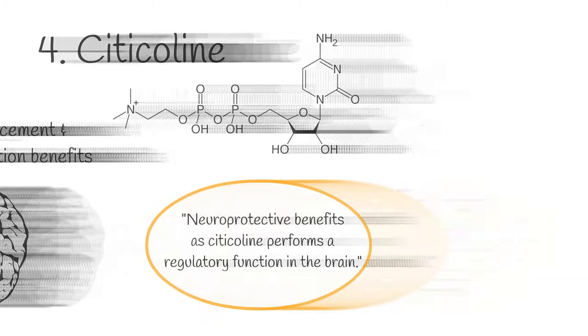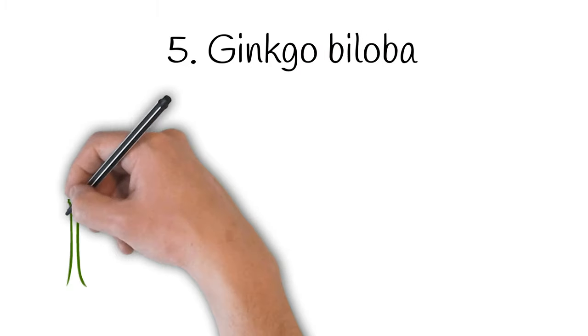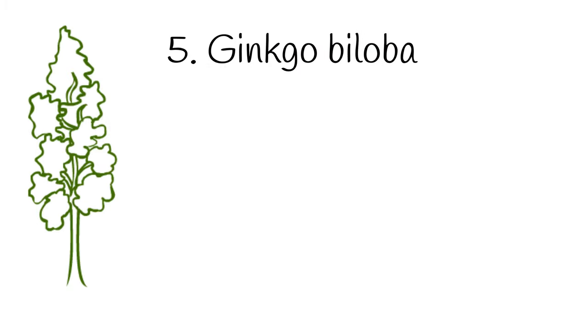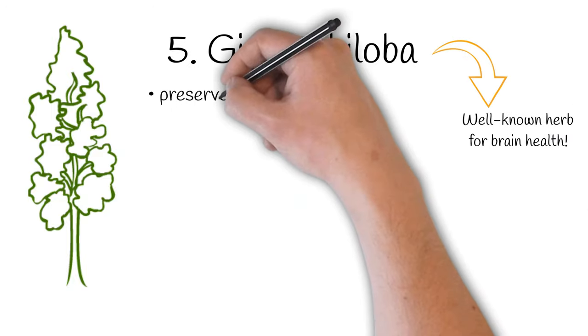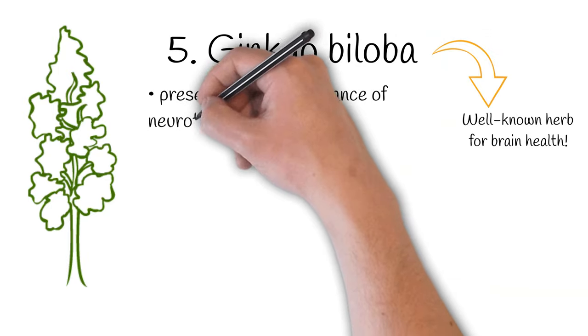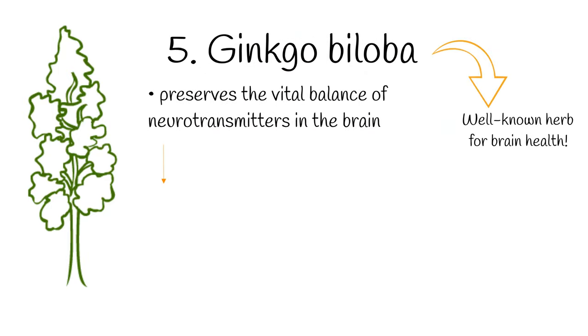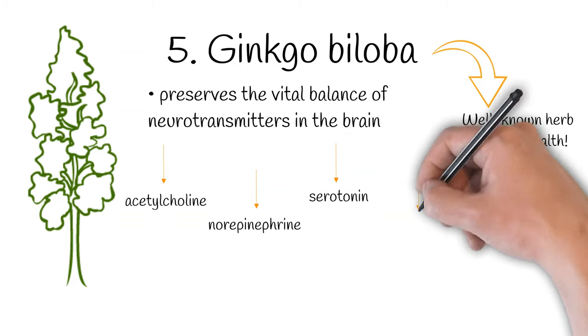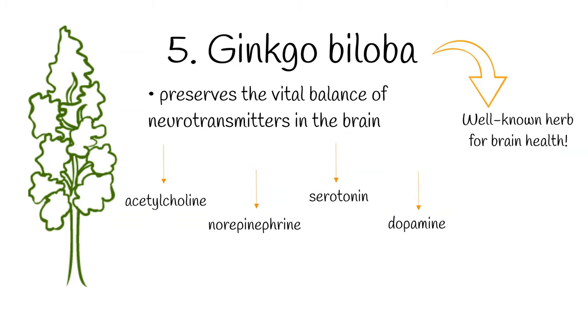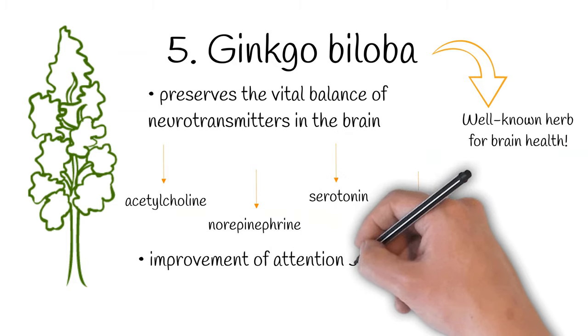Now let's talk about Ginkgo Biloba. You've probably heard about Ginkgo before because this is a well-known herb for brain health. It helps preserve the vital balance of neurotransmitters in the brain. Most notably it is known to maintain acetylcholine, norepinephrine, serotonin, and dopamine. Together this helps improve attention span and reduce impulsivity.